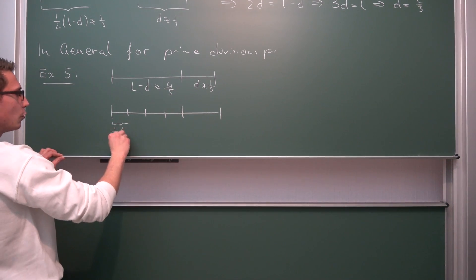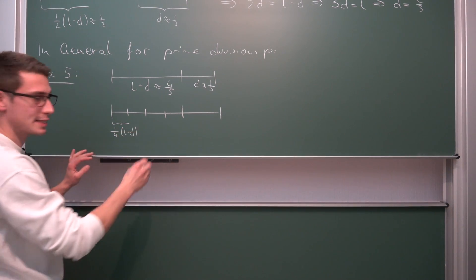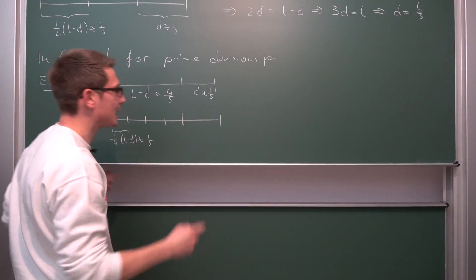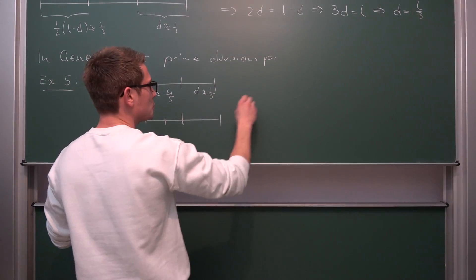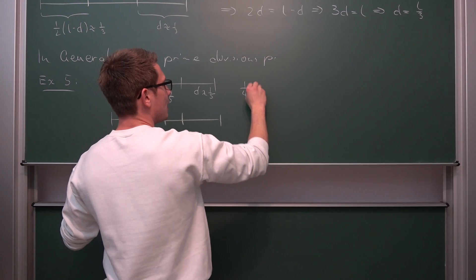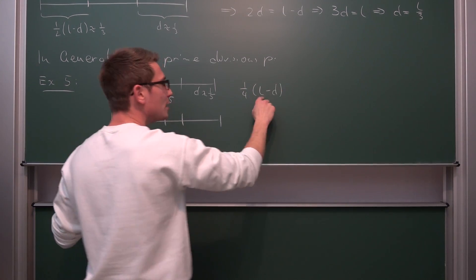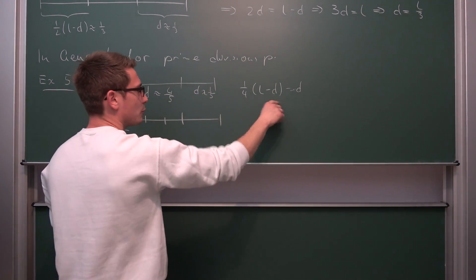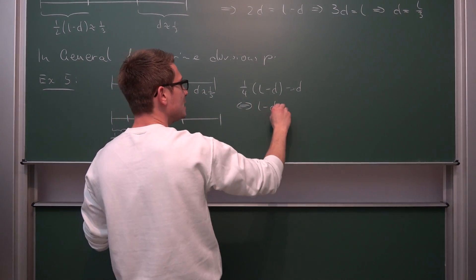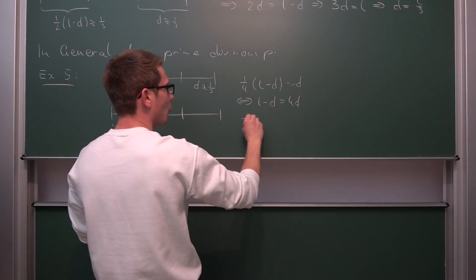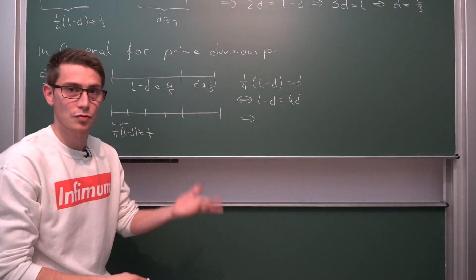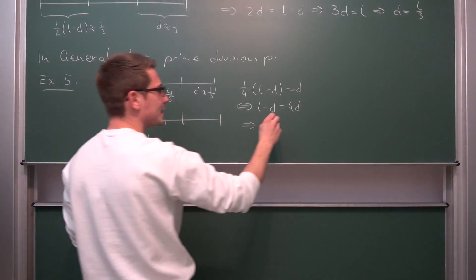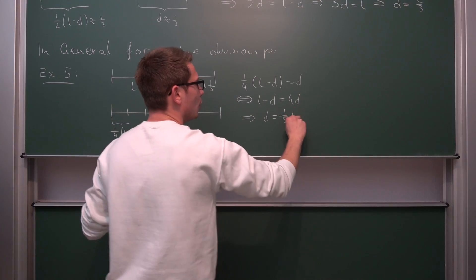By halving this and halving the halves once again — quartering it. One of these parts is going to be one quarter of L minus d, and this is our new one-fifth. But don't forget our original one-fifth is also d, so we once again have an equation: one quarter of L minus d equals d. Multiplying both sides by 4: L minus d equals 4d, so 5d equals L — our division equals one fifth of L.